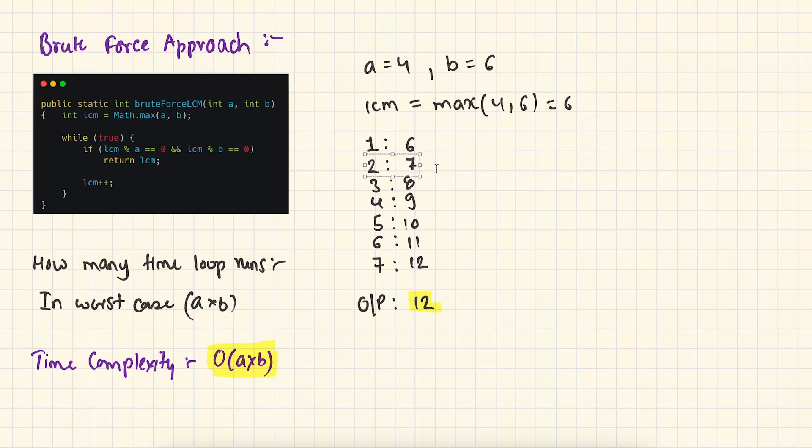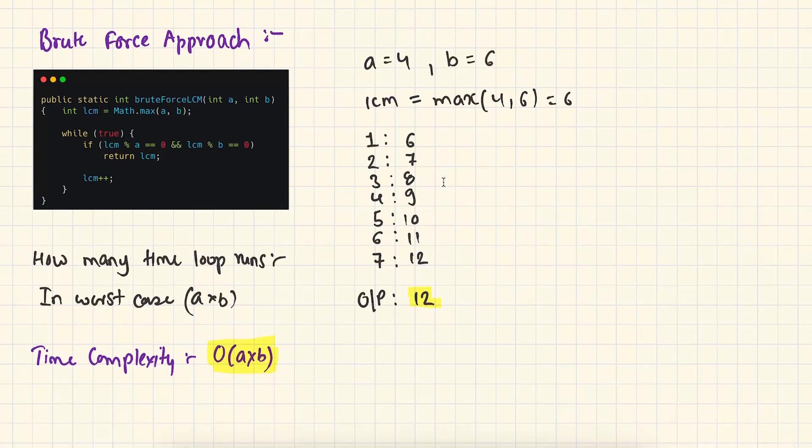In the next iteration, the value becomes 7. In this iteration also, the condition becomes false. In the next iteration, the value of LCM becomes 8. In this iteration also, the condition becomes false, and it will keep on going. There is a point in time when we reach the seventh iteration. At that time, the value of LCM is going to be 12. At this point, we check if 4 and 6 both divide 12 or not, and we get true this time. So this time, our code simply returns the value of 12.